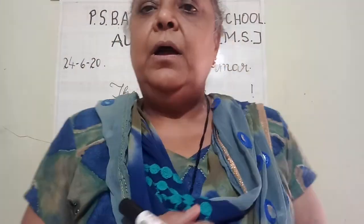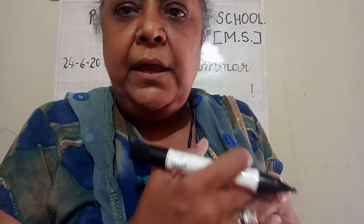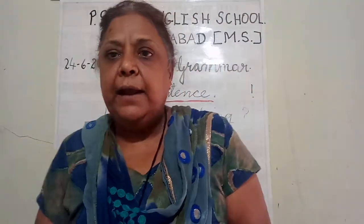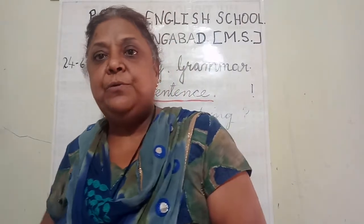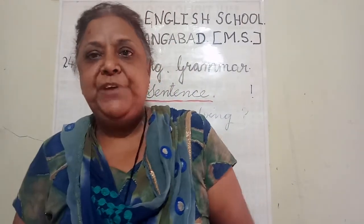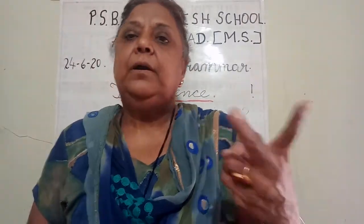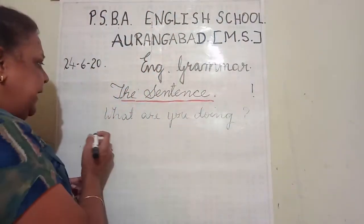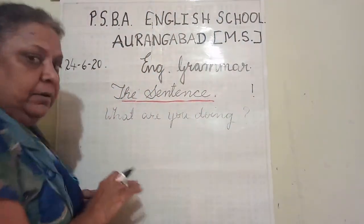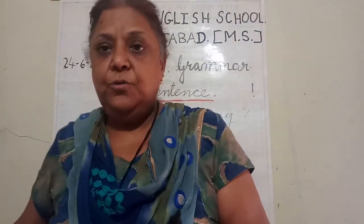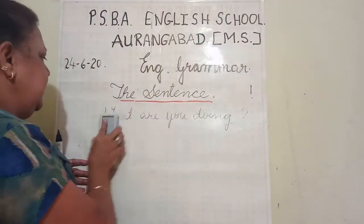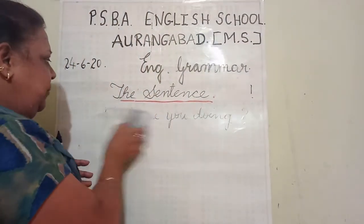I had stopped here and I wanted to start with object and direct object. So in sentence, we are going to learn objects. There are two objects — direct object and indirect object.